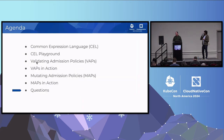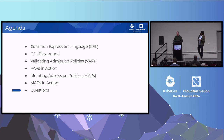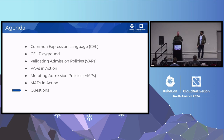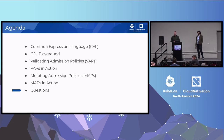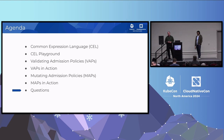That's where we are. We've got about 39 seconds left. If there are any questions please ask them quickly, or you can catch us at the end. A question from the audience: we've all dealt with the downsides of validating and mutating admission webhooks. What are the downsides to implementing the same patterns using CEL and validating admission policies versus webhooks?